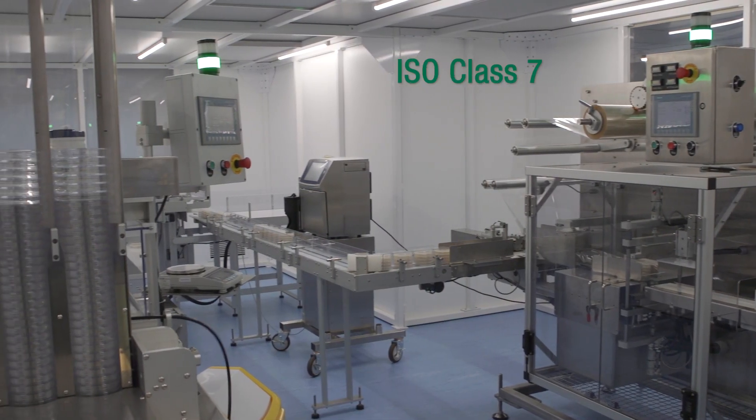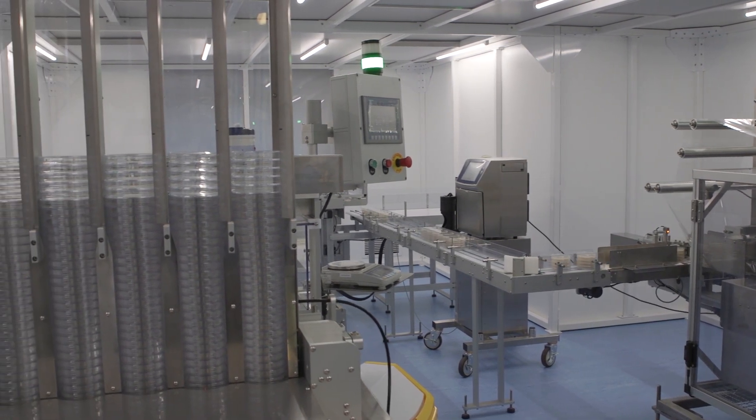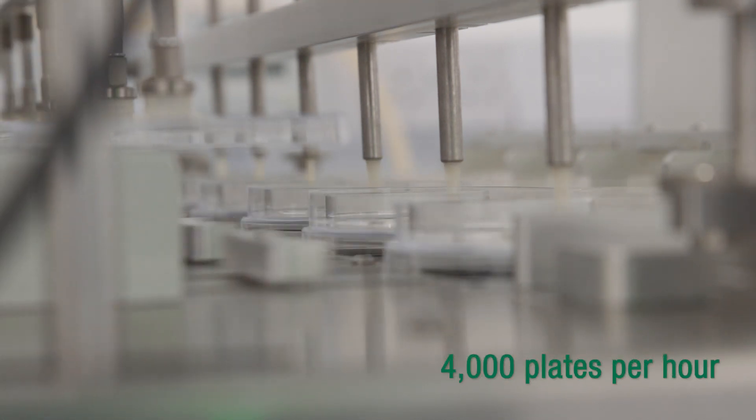This is our ISO class 7 clean room and houses our M4000 automated plate pouring equipment. Our equipment has the ability to make in excess of 4,000 plates per hour. Plates are manufactured through six lanes ensuring a constant supply.